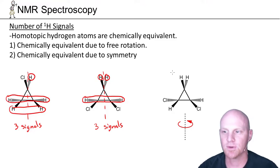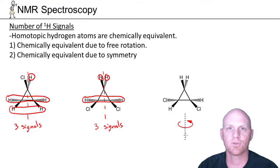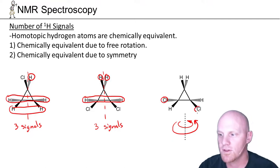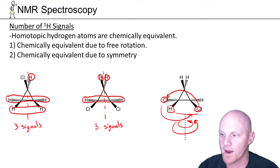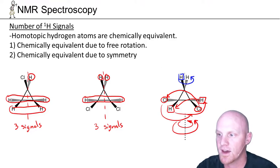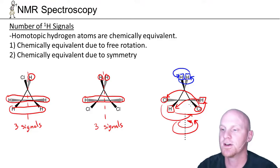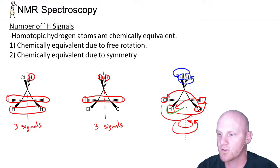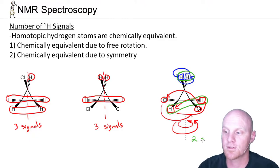Finally, the last tricky example. In this molecule there's no plane of symmetry whatsoever. But there is a different type of symmetry — an axis of rotation, or rotational symmetry. If we rotate 180 degrees around this axis, each chlorine swaps positions with the other chlorine, and each hydrogen swaps with its counterpart. Everything that is 180 degrees apart is in exactly the same environment. So these two hydrogens are equivalent due to rotational symmetry, and these two hydrogens are equivalent due to rotational symmetry — giving only two signals.